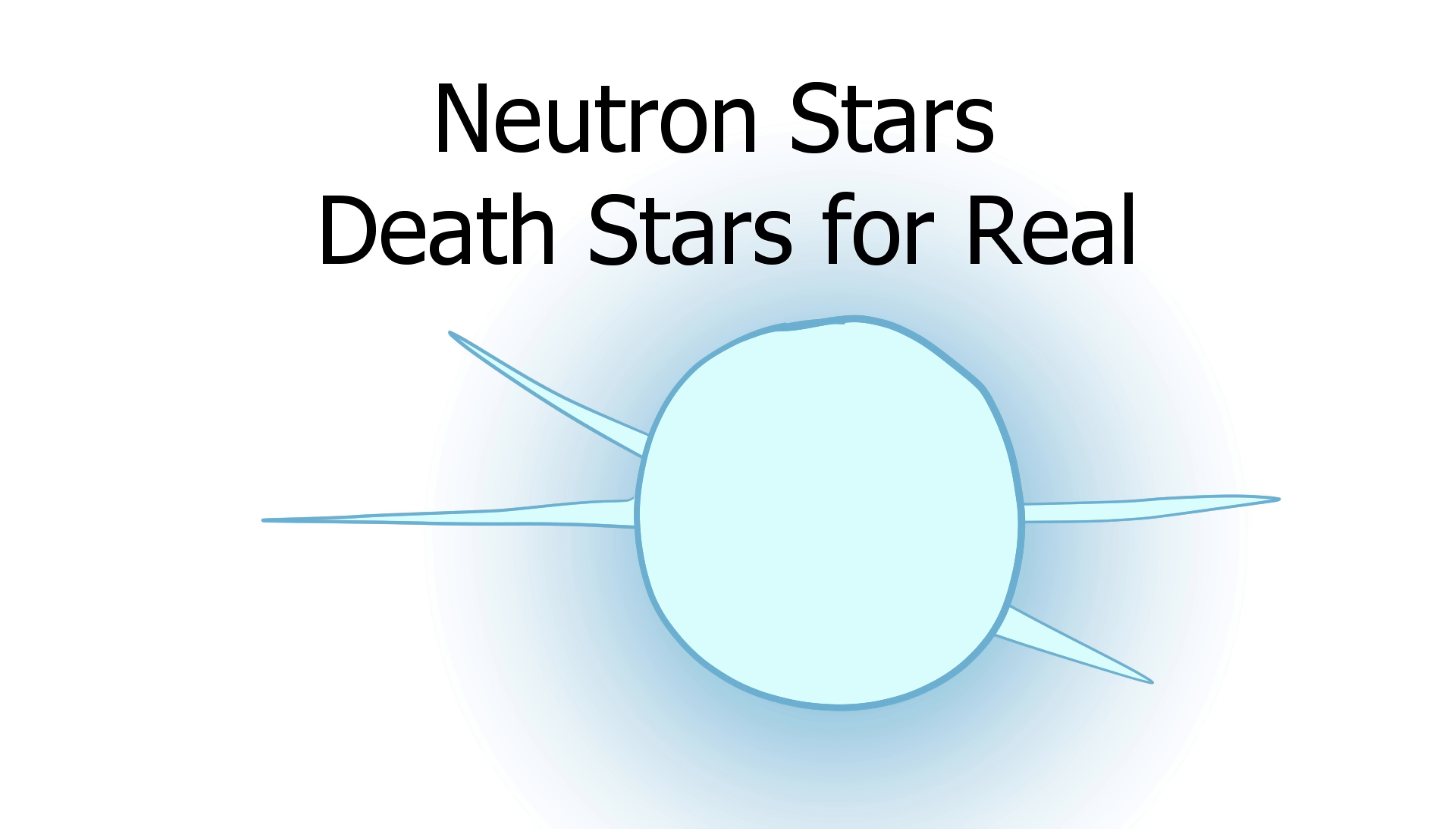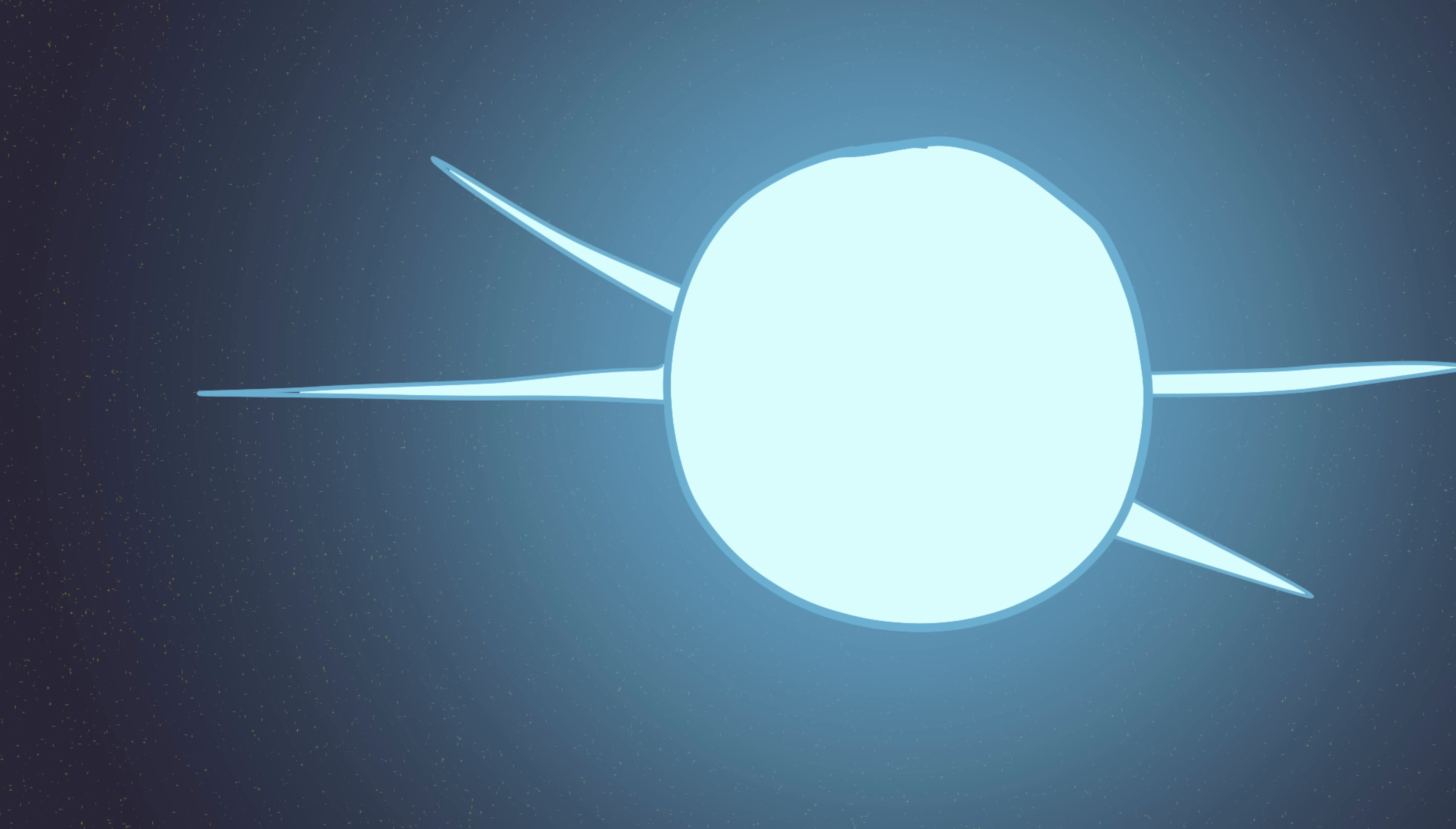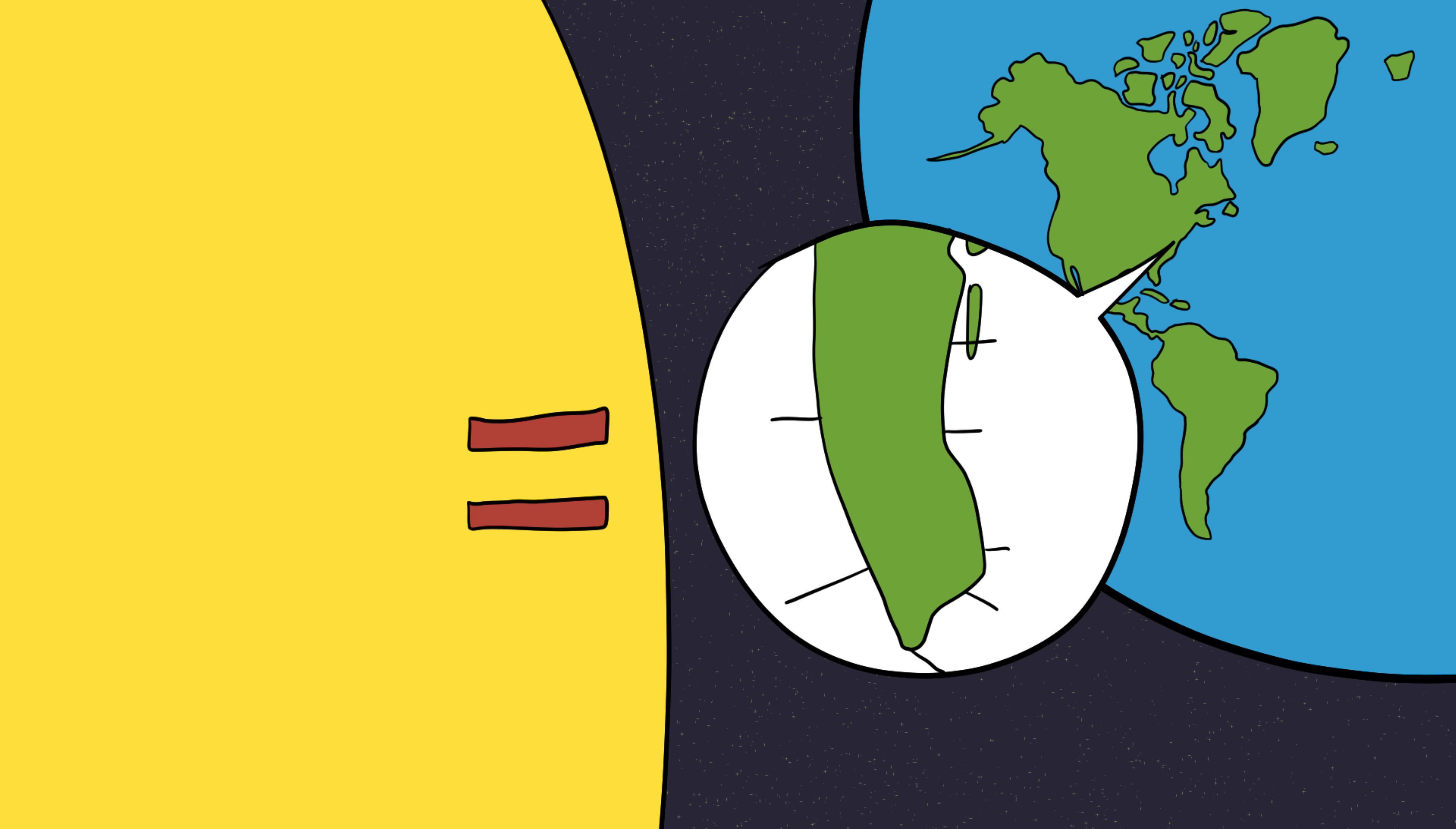Number seven, neutron stars. When massive stars die, sometimes they don't collapse into black holes. Instead, they become neutron stars, and these are arguably just as terrifying. Imagine an entire sun's worth of mass packed into a sphere about the size of Manhattan.